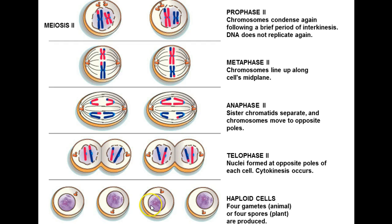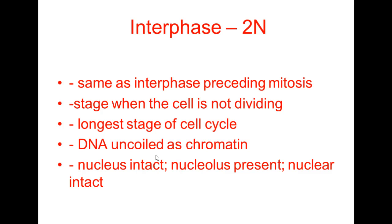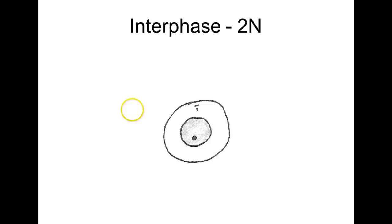Let's look at the specifics of what's happening in each stage. In interphase, the cell is diploid — this is just like interphase prior to mitosis. It's the stage when the cell is not dividing, the longest stage of the cell cycle. The DNA is uncoiled as chromatin, we have an intact nucleus, nucleoli are present, and the nuclear membrane is intact. There are centrioles visible at the top of this sketch.